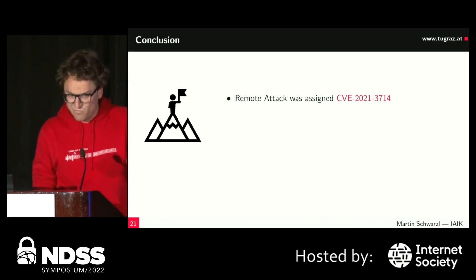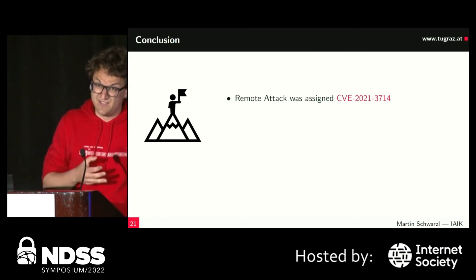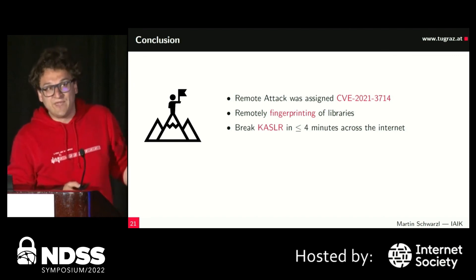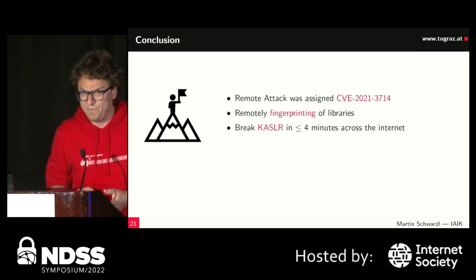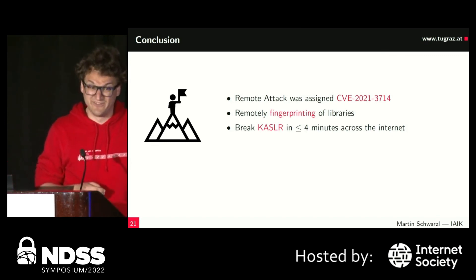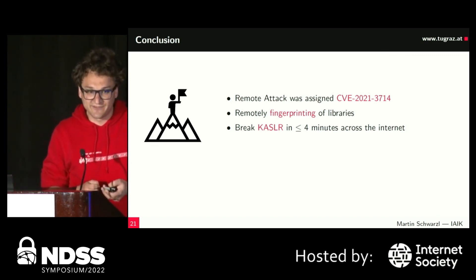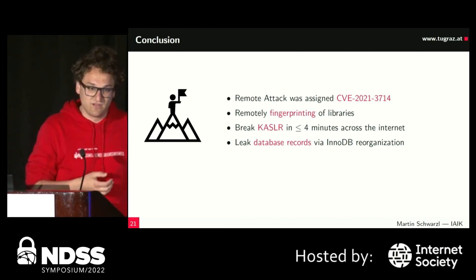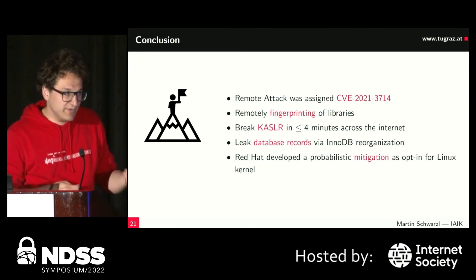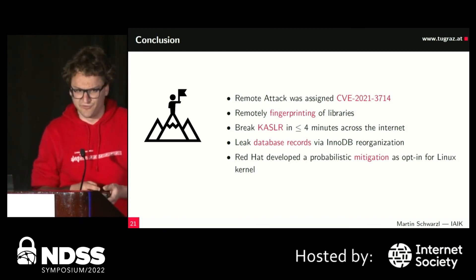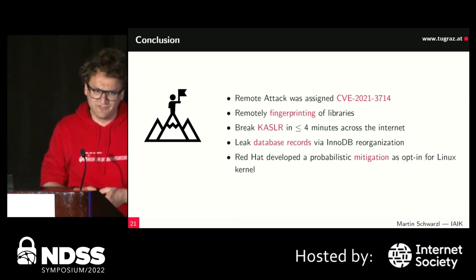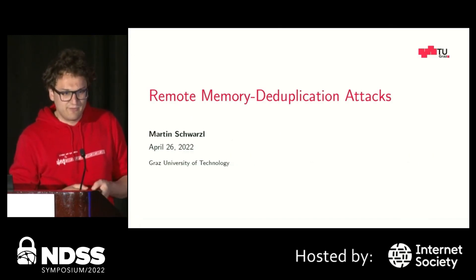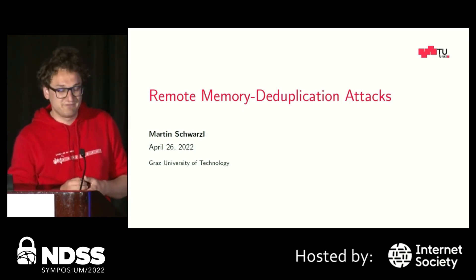Concluding: we showed that memory-deduplication attacks are possible in a remote scenario. We showed how to fingerprint libraries remotely, and using HTTP/2, it is possible to break KASLR in less than four minutes across the internet — 14 network hops away. We leaked database records using the InnoDB reorganization exploitation technique. After disclosing to Red Hat and other vendors, we worked on a new probabilistic mitigation that will be merged into the Linux kernel soon. Thank you.